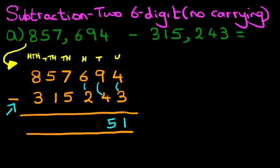Thousands column: 7 minus 5 is 2. Ten thousands column: 5 minus 1, that's right, is 4. And lastly, the hundred thousands column: 8 minus 3 is 5.